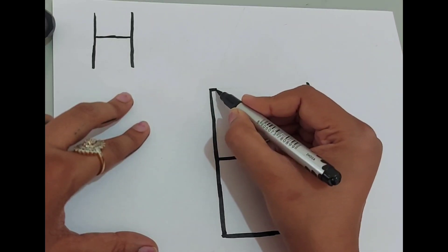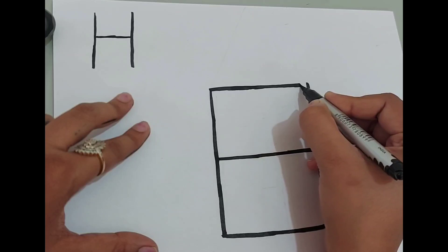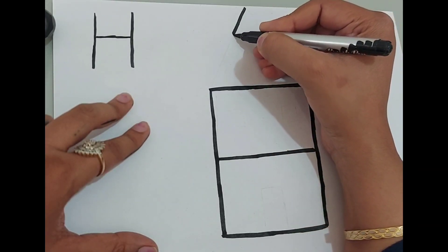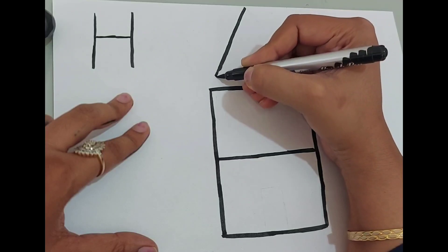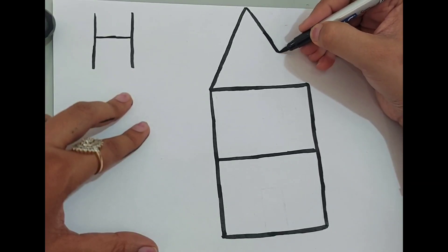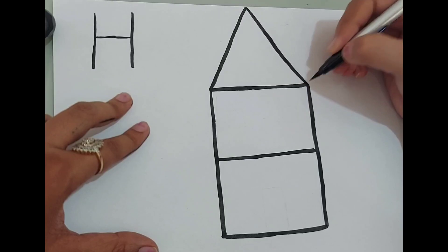And from above. Now make a triangle, and here is the roof of our house.